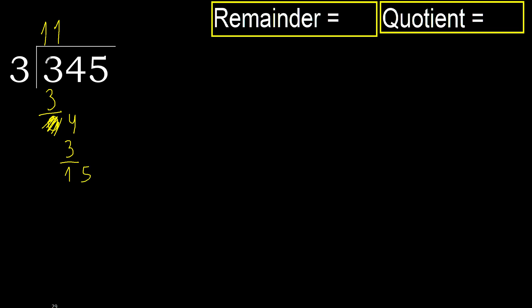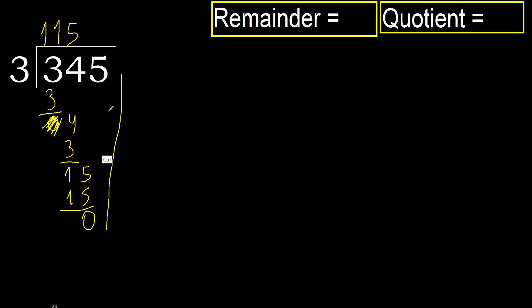15. 3 multiplied by 5 is 15, which is not greater. 15 minus 15 equals 0. Next. That is not a number, therefore finish it.